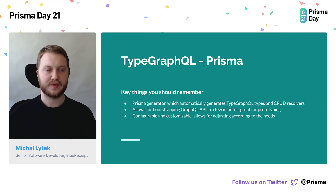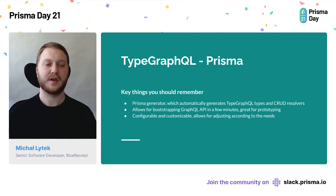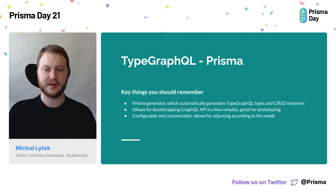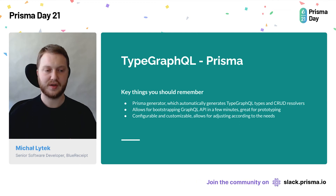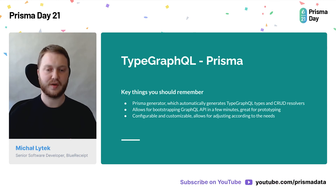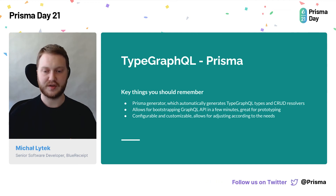To sum up, there are a few key things to remember about TypeGraphQL-Prisma. It's a Prisma generator that automatically generates TypeGraphQL classes — the GraphQL types and all CRUD resolvers — for your Prisma schema models. It's really helpful for bootstrapping a GraphQL API in just a few minutes, which is great for prototyping. It's also configurable and customizable so you can adjust and extend it according to your needs. That's all — thank you for your attention.